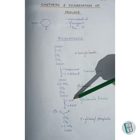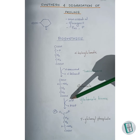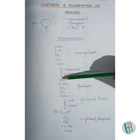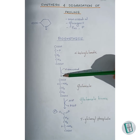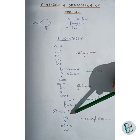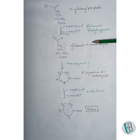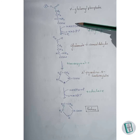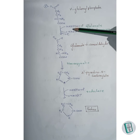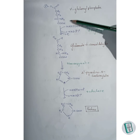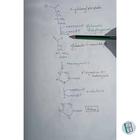Here, ATP donates one of its phosphate groups to glutamate. The phosphate attaches to the oxygen of the COH group and forms gamma-glutamyl phosphate. The gamma-glutamyl phosphate is then converted to glutamate gamma semi-aldehyde in the presence of glutamate dehydrogenase.